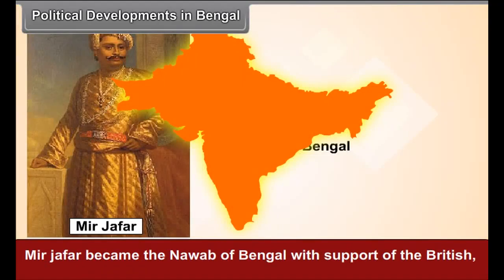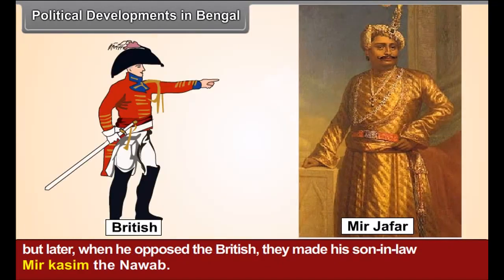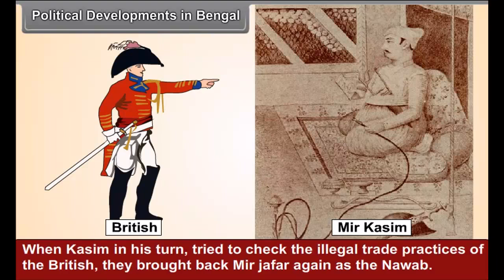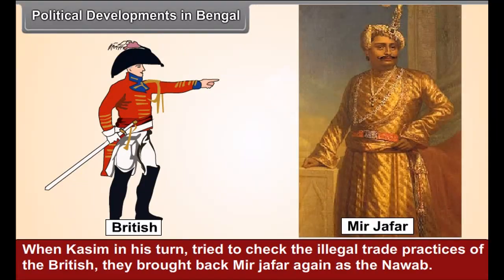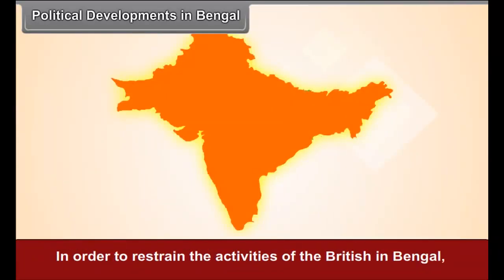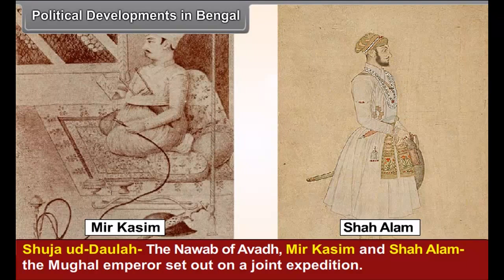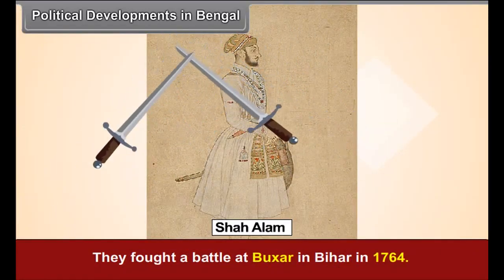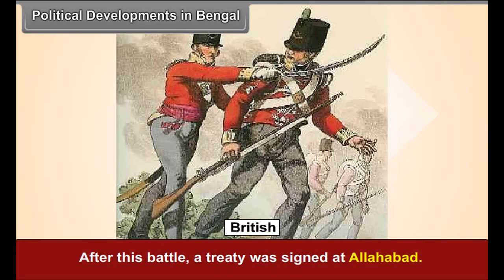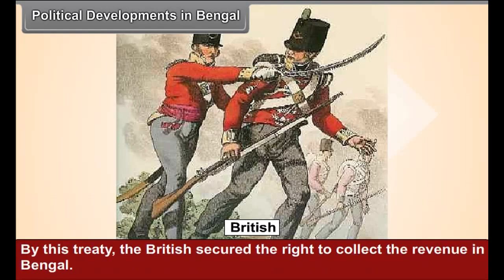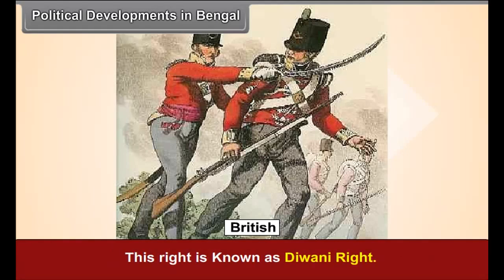Meir Jafar became the Nawab of Bengal with the support of the British. But later, when he opposed the British, they made his son-in-law Meir Qasim the Nawab. When Qasim, in his turn, tried to check the illegal trade practices of the British, they brought back Meir Jafar again as Nawab. In order to restrain British activities in Bengal, Shuja Uddaula the Nawab of Awad, Meir Qasim, and Shah Alam the Mughal Emperor, set out on a joint expedition. They fought a battle at Baksar in Bihar in 1764, which the British won. After this battle, a treaty was signed at Allahabad, by which the British secured the Diwani Right — the right to collect revenue in Bengal. Thus, the foundation of British rule in India was laid in Bengal.